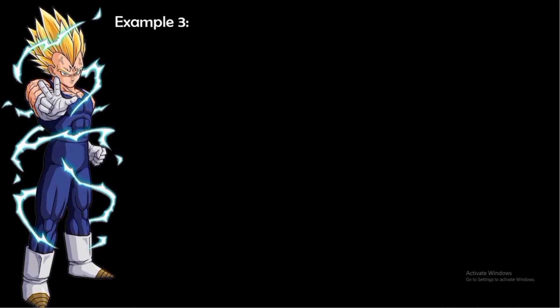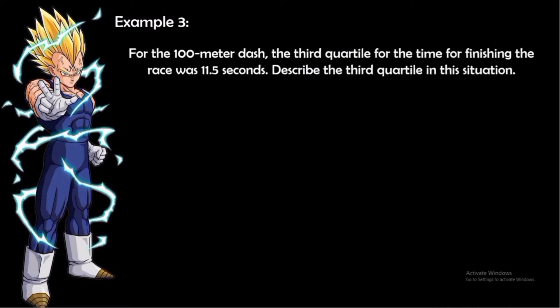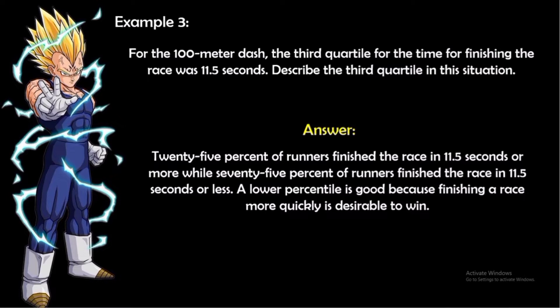Example 3: For the 100-meter dash, the third quartile for the time to finish the race was 11.5 seconds. This means 25% of runners finish the race in 11.5 seconds or more, while 75% finish in 11.5 seconds or less. A lower percentile is good since finishing more quickly is desirable to win.